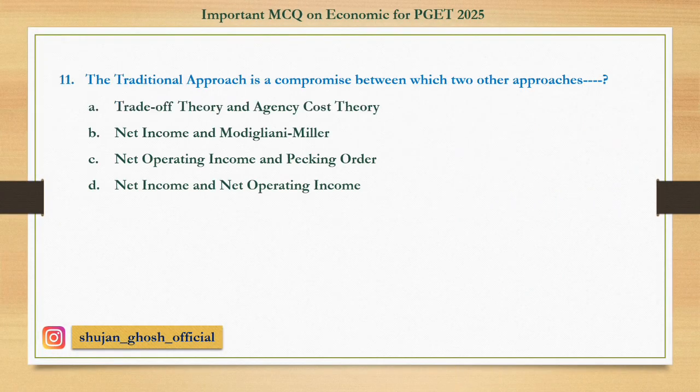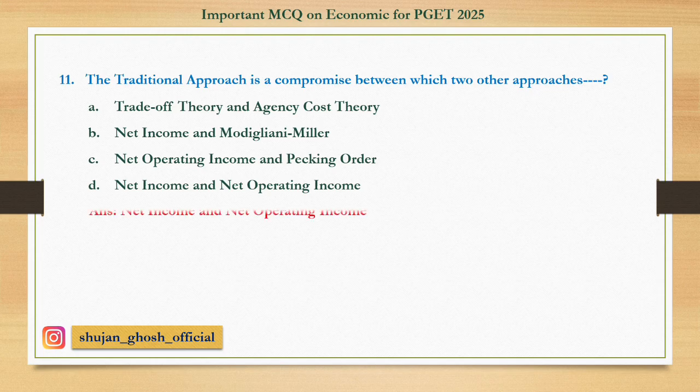Question number eleven: The traditional approach is a compromise between which two other approaches? Option A: trade-off theory and agency cost theory. B: net income and Modigliani-Miller theory. C: net operating income and pecking order theory. D: net income and net operating income theory. Answer: net income and net operating income theory.